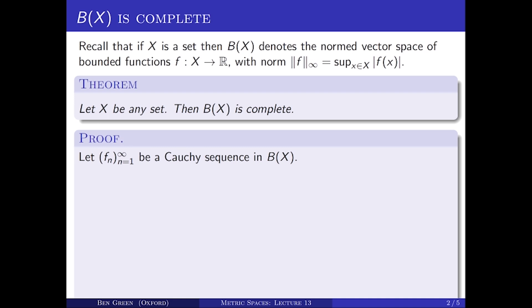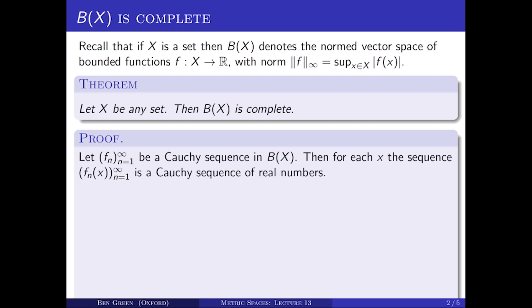Suppose we have a Cauchy sequence in this space B(X). Let that Cauchy sequence consist of functions Fn, n equals one, two and so on. Then it's quite easy to see from the definition of Cauchy sequence and from the definition of the norm, that for each fixed x, if I evaluate this sequence of functions Fn at the point x, that is then a Cauchy sequence of real numbers. You can take the same value of big N that works for the sequence Fn for each of these individual sequences Fn(x).